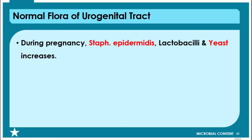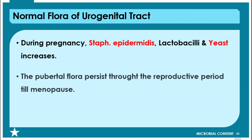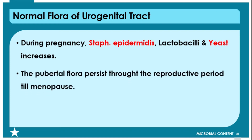During pregnancy, Staphylococcus epidermidis, Lactobacilli, and yeast increase in number. The pubertal flora persists throughout the reproductive period until menopause. This is also a most important aspect of the normal flora of the urogenital tract, particularly in the female.